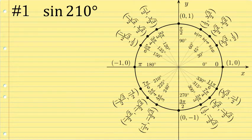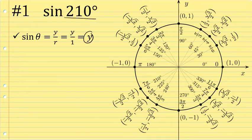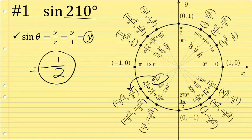First, the sine of 210 degrees. The sine ratio y over r on the unit circle is just going to be the associated y-coordinate with the angle. So to find the sine of 210 degrees, I'll find 210 degrees on the unit circle and look at its associated y-coordinate, which is negative one half. The sine of 210 degrees is exactly negative one half.